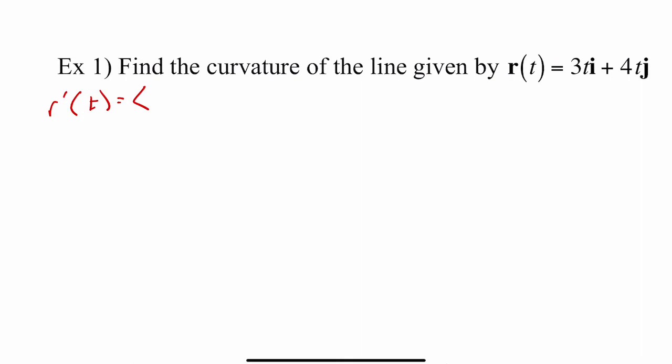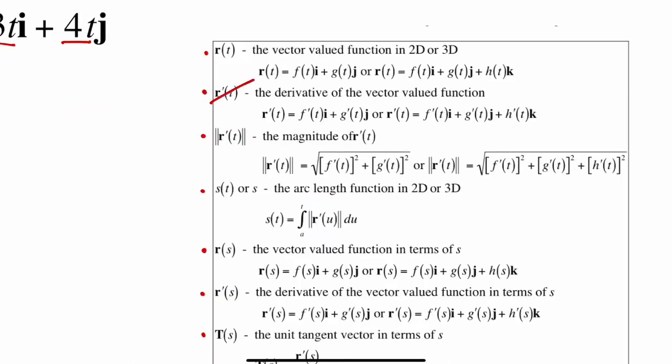So my x component is the 3t. That's what's in front of the i. So the derivative of 3t would be 3. My y component is 4t. That's what's in front of the j. And the derivative of 4t is 4. So that step is done.